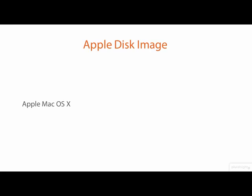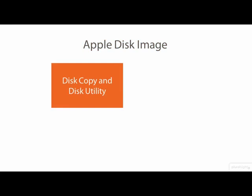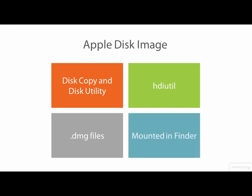The Apple disk image format is commonly used in the Apple Mac OS X operating system for distributing files and software over the internet and between Apple and non-Apple computers. Apple disk images are also used for backing up and burning CDs and DVDs. Apple disk image files are usually created using the Mac OS X utilities Disk Copy and Disk Utility, and can be managed using the command line program hdiutil. Apple disk image files typically use the .dmg file extension and are usually referred to as DMG files. DMG files are mounted in the OS X Finder the same way devices in Linux are mounted. Remember that OS X is really Unix under that glossy Finder GUI.